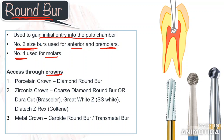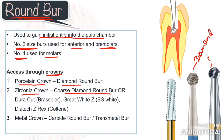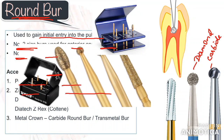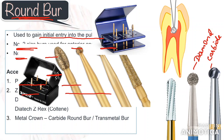If you want to create an access through a crown, the type of round burr you use will differ. For a porcelain crown, you may select a diamond round burr. When preparing through modern crowns like zirconia, you can use a coarse diamond burr with a light touch and copious water, or burrs specifically manufactured by companies like Brasseler, SS White, Coltene, etc. For gaining access through metal crowns, a tungsten carbide round burr will function better, or you can use a transmetal burr which is specifically designed for cutting any type of metal.